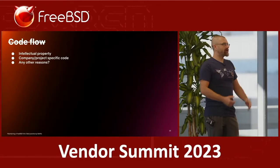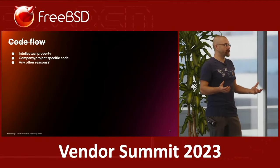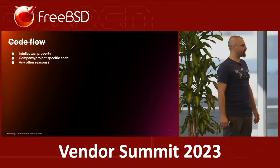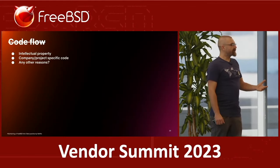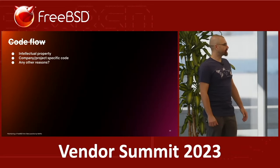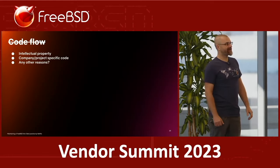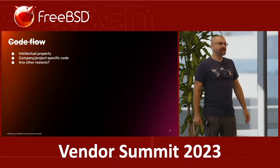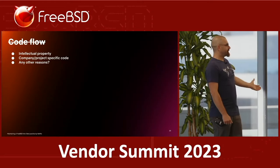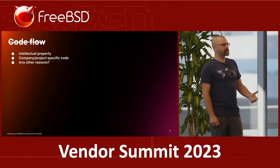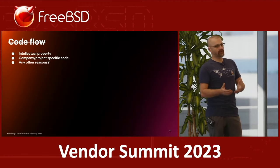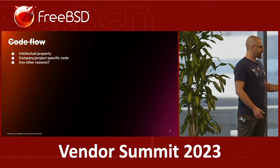Now let's touch on the topic of code flow that doesn't happen. If you're talking about a FreeBSD fork, it means there will be some divergence — if there is zero divergence, it's not a fork. Some diffs will remain. Apparently this is some intellectual property you don't want to share with the world. At Netflix, we are happy that we don't have any, because all our intellectual property lives in Hollywood — in FreeBSD we share everything, which makes our life easier. That doesn't apply to everyone. The other reason is code that has zero value to the outside world — it is so specific to your project that there is no point in sharing it and the project will not accept it.